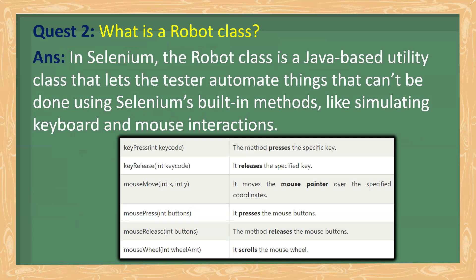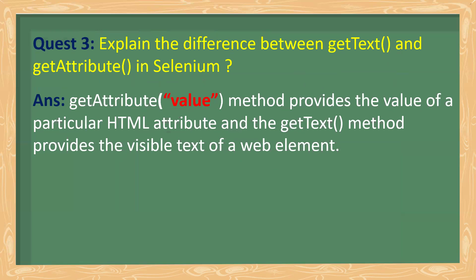What is the Robot class in Selenium? The Robot class is a Java-based utility that lets testers automate things that can't be done using Selenium's built-in methods, like simulating keyboard and mouse interactions. Selenium already has the Actions class, but you can also use the Robot class. Its methods include keyPress (presses a specific key), keyRelease (releases a key), mouseMove (moves the pointer to specific coordinates), mousePress, mouseRelease, and mouseWheel for scrolling.